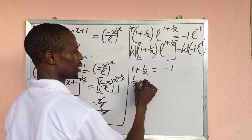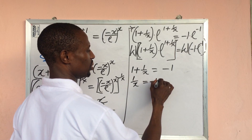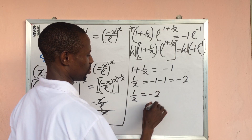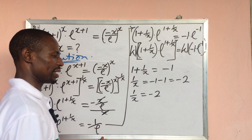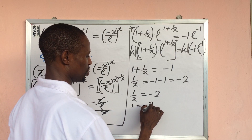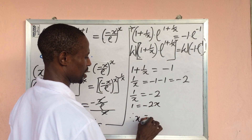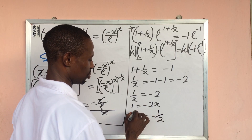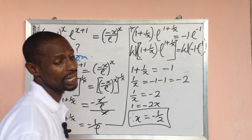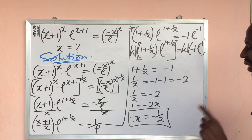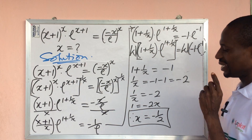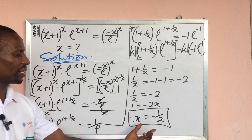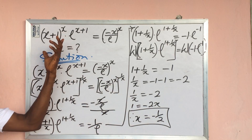From here: 1 over x equals minus 1 minus 1, which is minus 2. So 1 over x equals minus 2. Multiplying both sides by x gives 1 equals minus 2x. Therefore x equals minus 1 over 2. Note that x cannot be 0. Let's check whether x equals minus 1 over 2 satisfies our original equation.